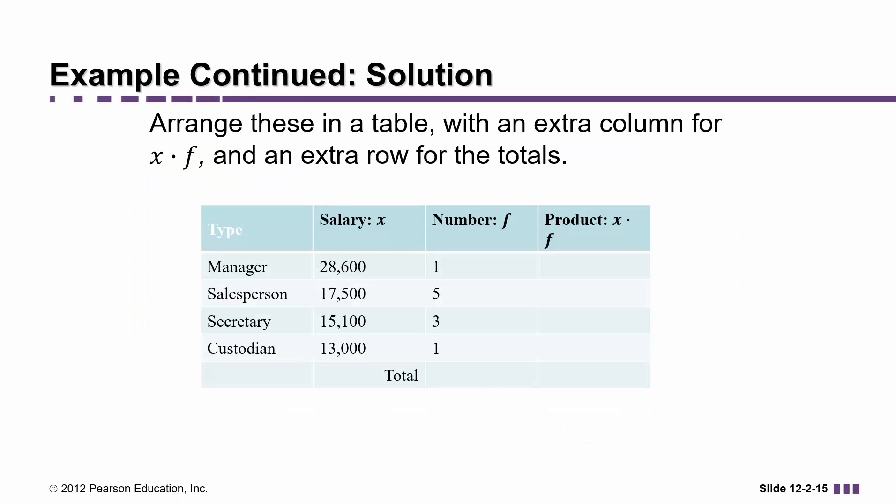I'm going to make a table and label my columns X and F for data values and frequencies, and I'm also going to have a column for the products. Here's the reason why. It may look like we only have four data values, but that's not actually true. For example, there are actually five salespersons that are each making $17,500.